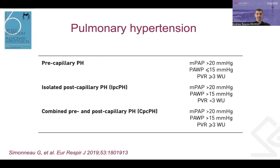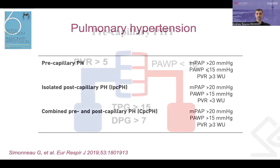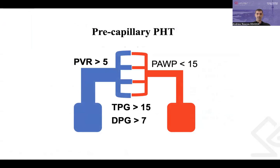Pulmonary hypertension is defined as a mean PA pressure more than 20 mmHg. It's subdivided into pre-capillary pulmonary hypertension with a high PVR and normal wedge pressure, post-capillary pulmonary hypertension with a normal PVR and high wedge pressure, and combined pre-post-capillary pulmonary hypertension. Pretty much all pulmonary hypertension secondary to lung disease is pre-capillary in nature — high PVR, high transpulmonary pressure gradient, high diastolic pressure gradient, with normal left-sided heart pressures.